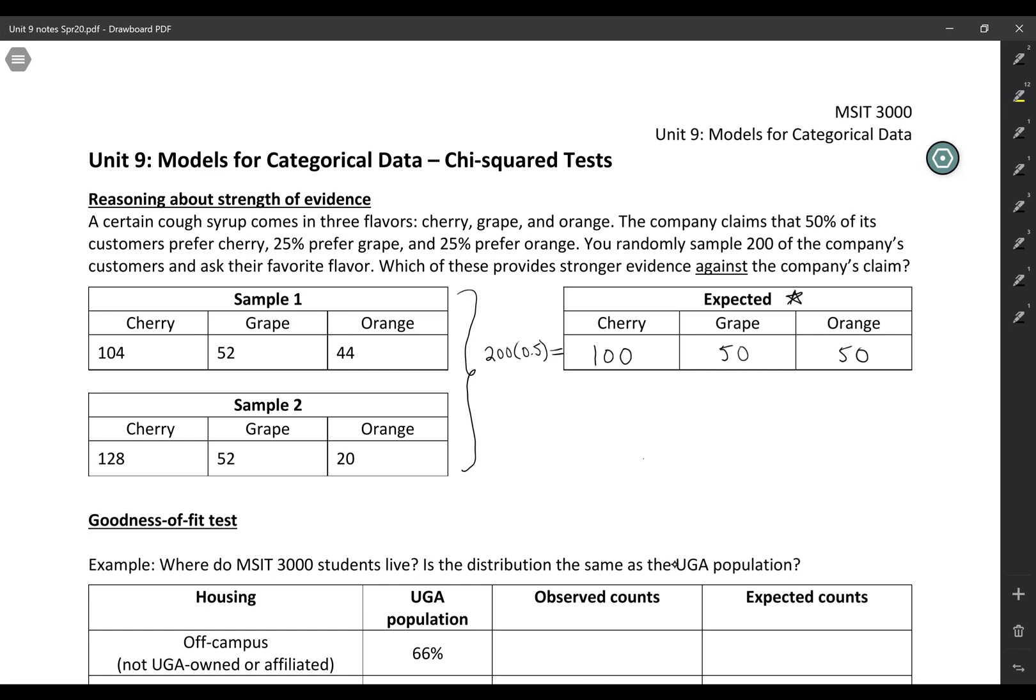And now we want to know which of these two samples would give us stronger evidence against the claim. So hopefully you picked sample two. I'm gonna get rid of this line, it's stressing me out. So this would give you stronger evidence against the claim.